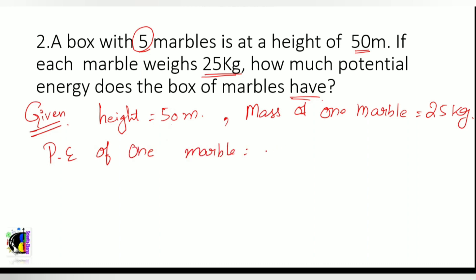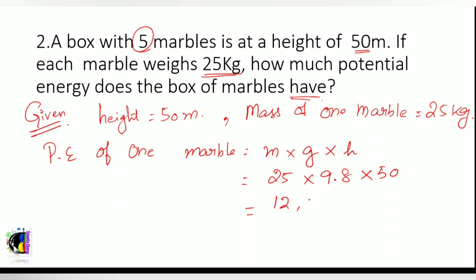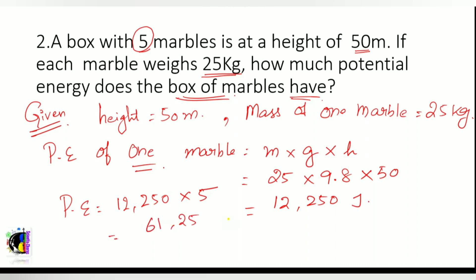Potential energy of one marble equals mass into g into height, which is 25 into 9.8 into 50, giving 12,250 joules for one marble. Since there are five marbles, we multiply: 12,250 into 5 equals 61,250 joules — the potential energy of the five marbles at a height of 50 meters.